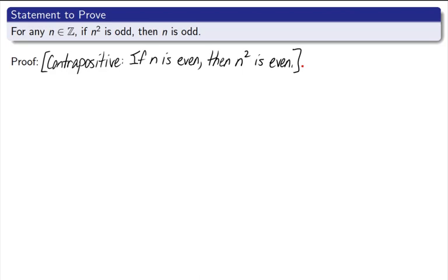My contrapositive is, if n is even, then n squared is even. Remember the contrapositive is the idea that you switch the order of the if-then, and you negate both statements. So I have if n is even, then n squared is even.